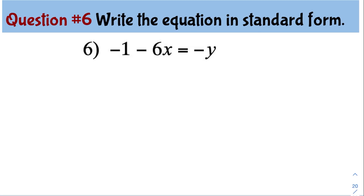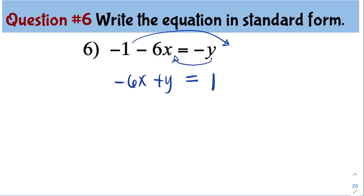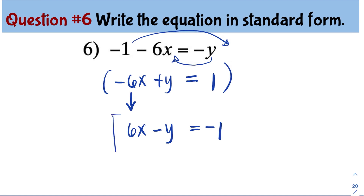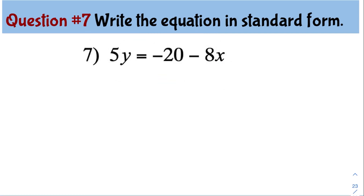Question number 6: negative 1 minus 6x equals negative y. Using the efficient method, I transfer negative 1 to the right — it becomes positive 1 — and transfer negative y to the left — it becomes positive y. So we have negative 6x plus y equals positive 1. However, this is not the final answer because a cannot be negative. Multiplying every term by negative 1, we get positive 6x minus y equals negative 1. So the answer is 6x minus y equals negative 1.